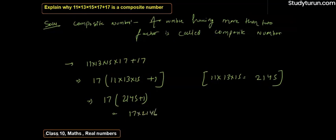So 17 into 2145 plus 1 is equal to 17 into 2146. 17 is a prime number and 2146 is a composite number because this whole number has a factor of 17, 1, 2146, 2, and 1073.